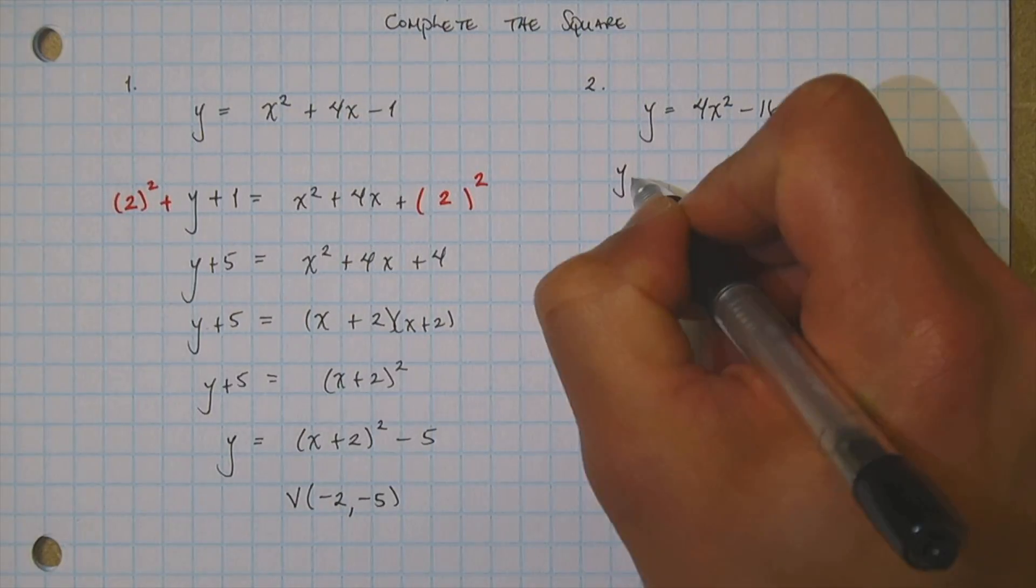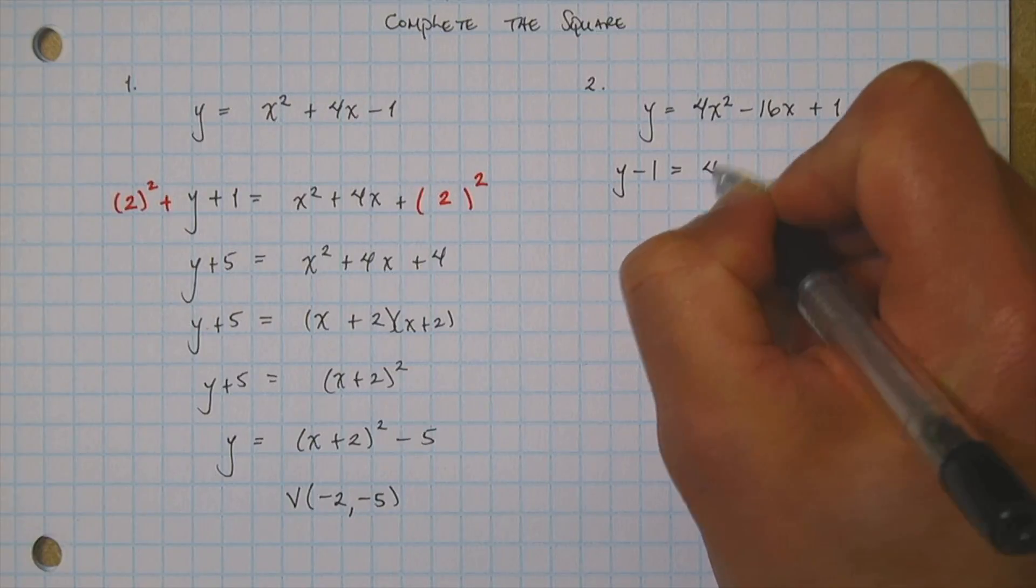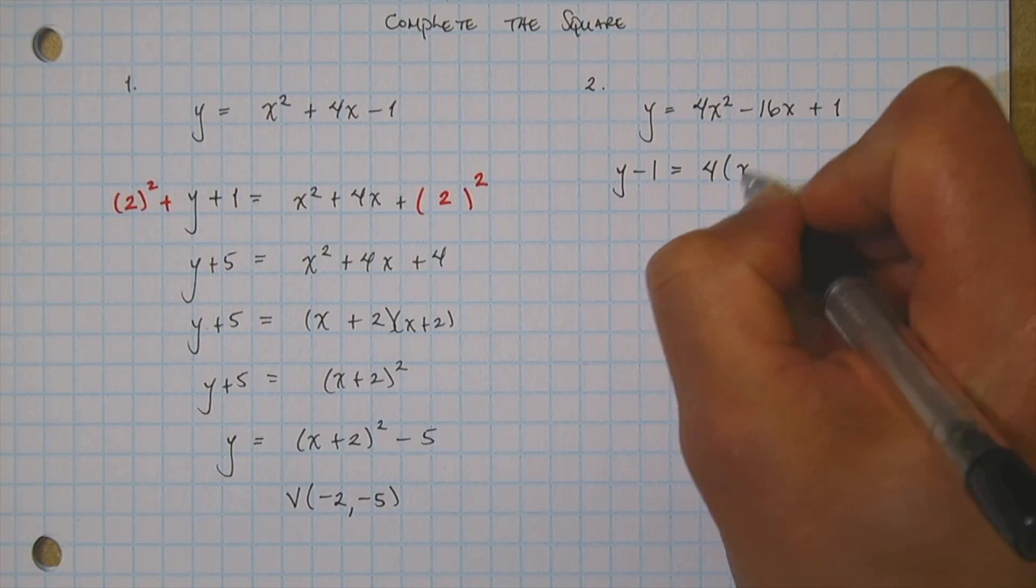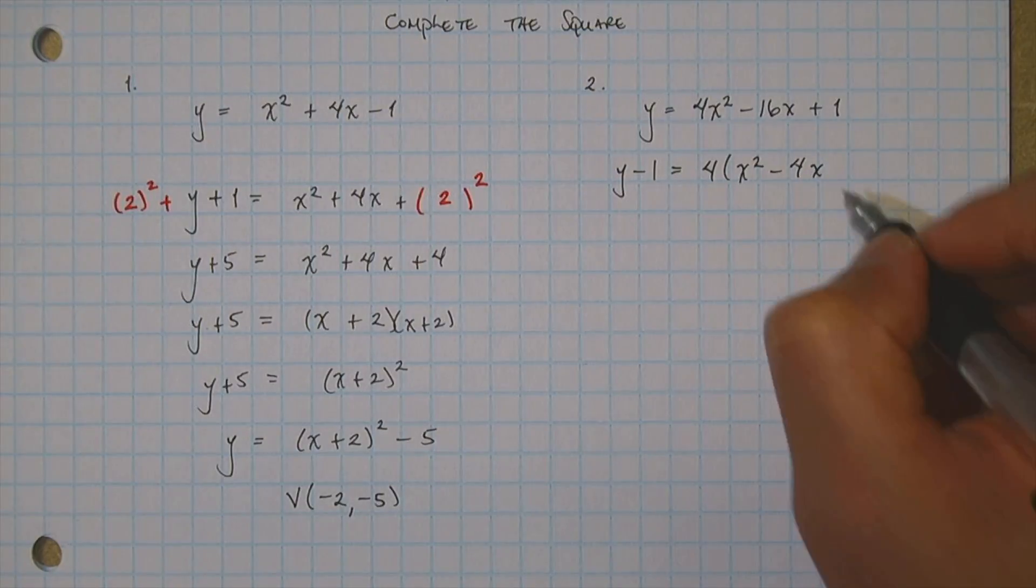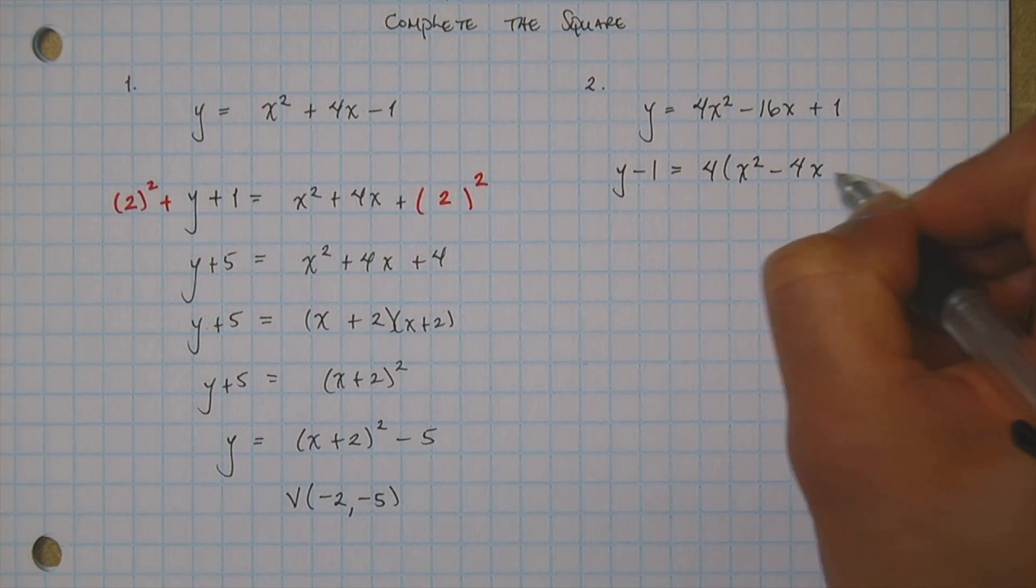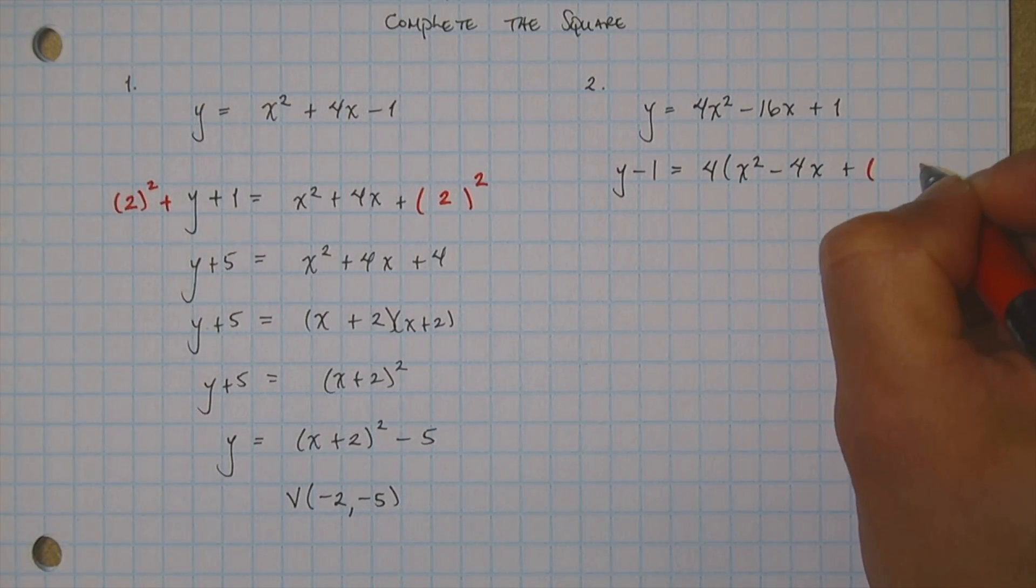Same thing, I'm going to take my plus 1 and bring it to the left. Factor out that 4. Now I have x squared minus 4x. And much the same thing, I'm going to give myself some room. I have to add my little square there.